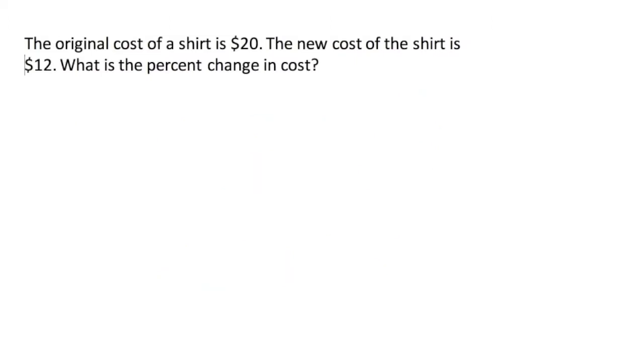In our second example, we have an original cost of a shirt that's $20 and a new cost that's $12. So what's the percent change? So again, we do new minus old over old. So we have 12 minus 20 over 20. So this gives us negative 8 over 20.